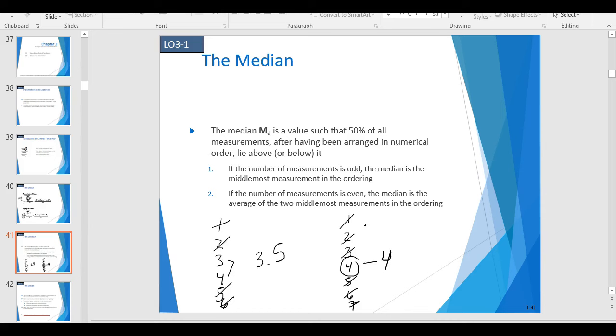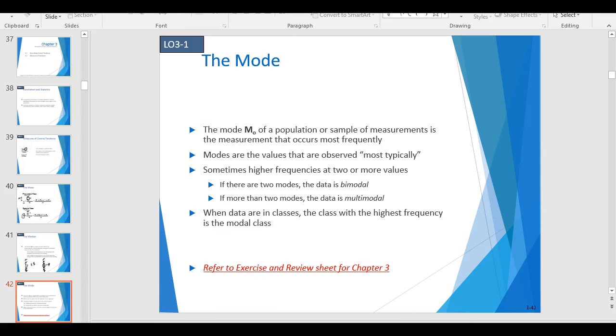And then the mode is just the most frequent value. If there are two modes, it's called bimodal. If there are more than two modes, it's called multimodal. And when the data are in classes, the class with the highest frequency is the modal class.